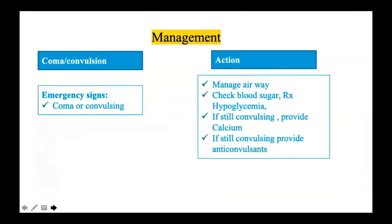For coma or convulsion management: the neonate may present with active convulsions, coma, or subtle seizures. Manage airway first and check blood sugar, as hypoglycemia is a common cause of seizures in neonates. For symptomatic hypoglycemia with convulsions, treat with 2 mL/kg of 10% dextrose bolus, followed by a glucose infusion rate of 6 mg/kg/min. After 30 minutes, recheck blood sugar — the target is above 50 mg/dL. If still low, increase the GIR by 2 mg/kg/min.